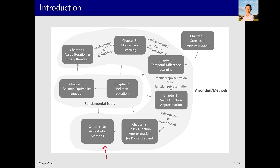So, what exactly is the actor-critic method? In fact, it is not a completely new method. It is essentially a variant of the policy gradient method that we studied in the previous lecture. So why is it called by a different name? The reason is that it incorporates value-based methods, especially value function approximation, into the policy gradient framework.